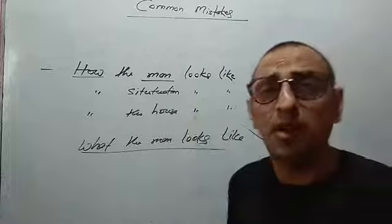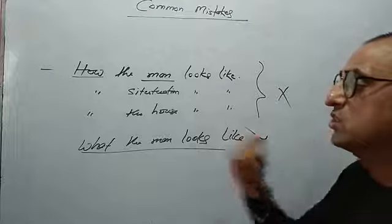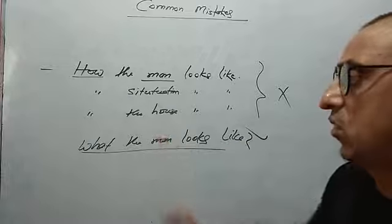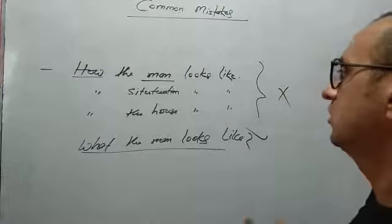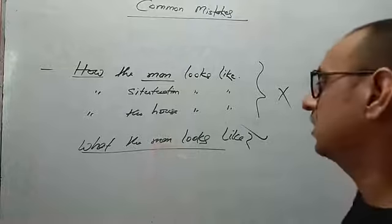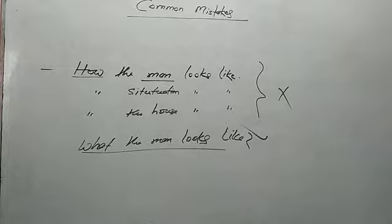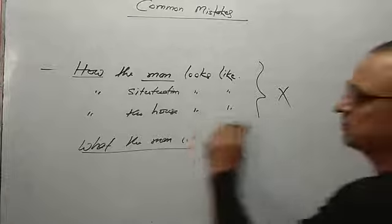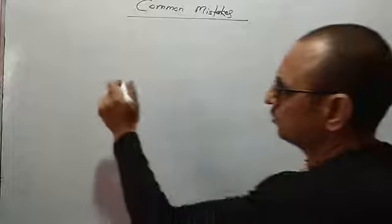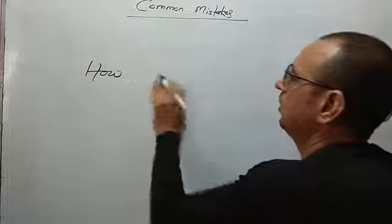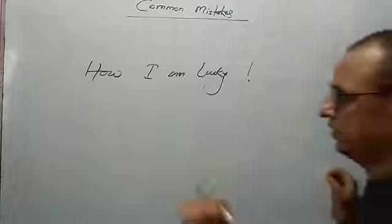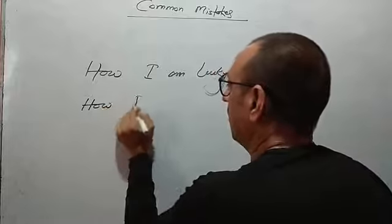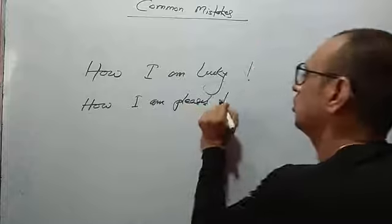I hope you have got it. Let's move to the second one. This is an exclamatory sentence. 'How I am lucky.' 'How I am pleased to meet you.' In all these exclamatory sentences that start with 'how,' we need to use an adverb or adjective immediately after 'how.'